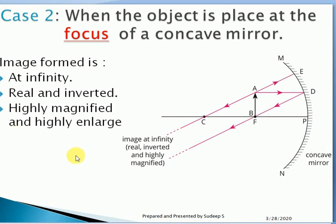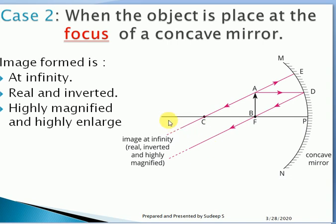Case 2: when an object is placed at the focus of a concave mirror. A ray parallel to the principal axis passes through the focus; the second ray through the center of curvature retraces back. The two reflected rays are parallel to each other and never intersect, so the image is formed at infinity — real, inverted, and highly magnified.